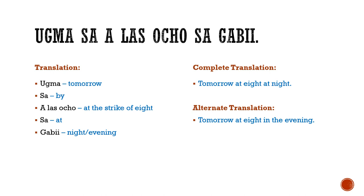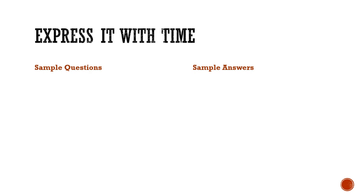Either translation is correct. Let's have a few more examples with reference to time. Some of them are questions, some are answers. 'Unsa nga oras ta mag-abot?' — unsa means what, nga oras means specific time, ta is short for kita meaning we or us, and mag-abot means going to meet. So that translates to: what time are we going to meet?